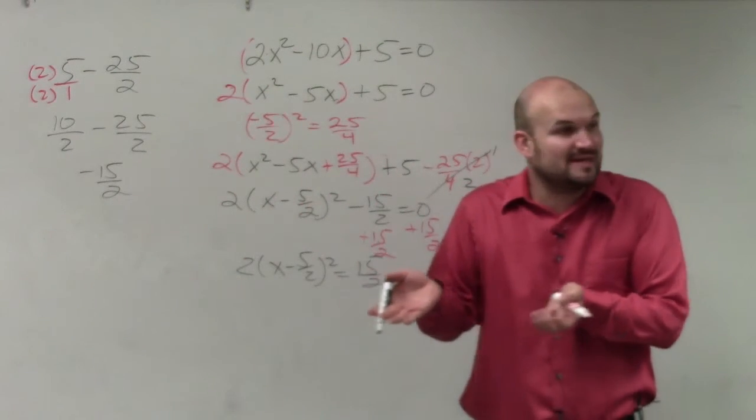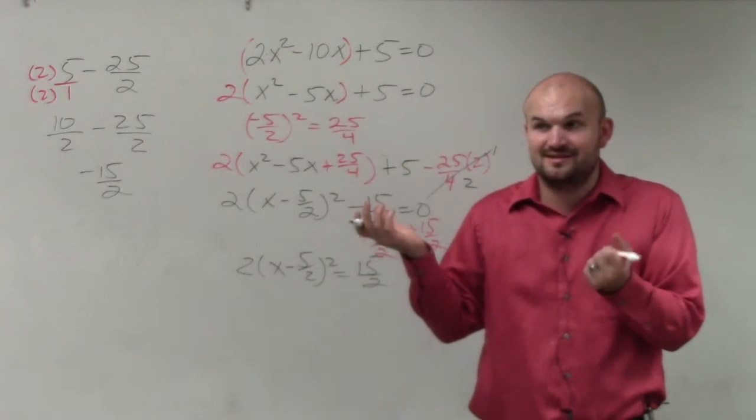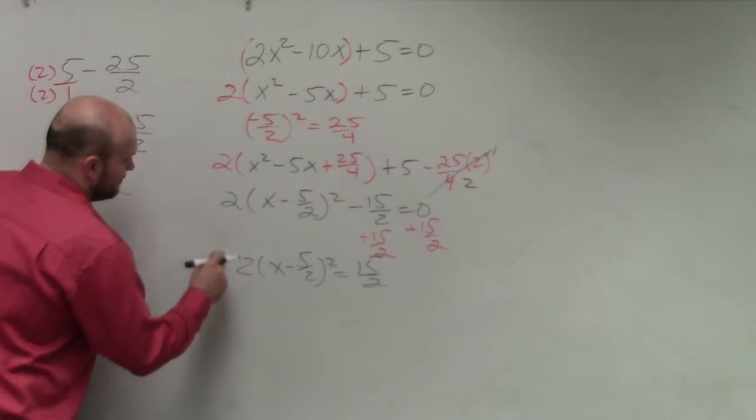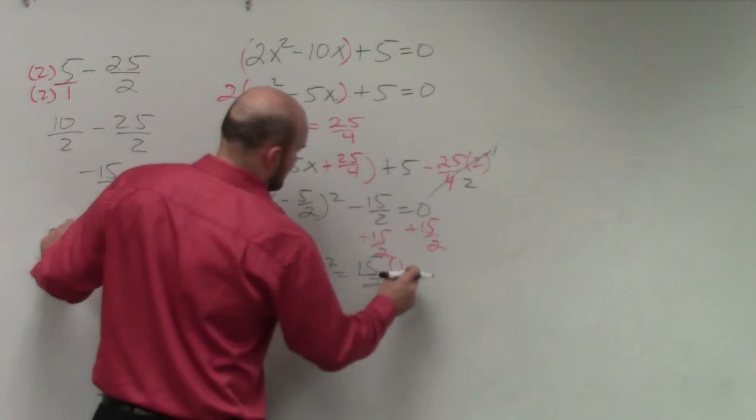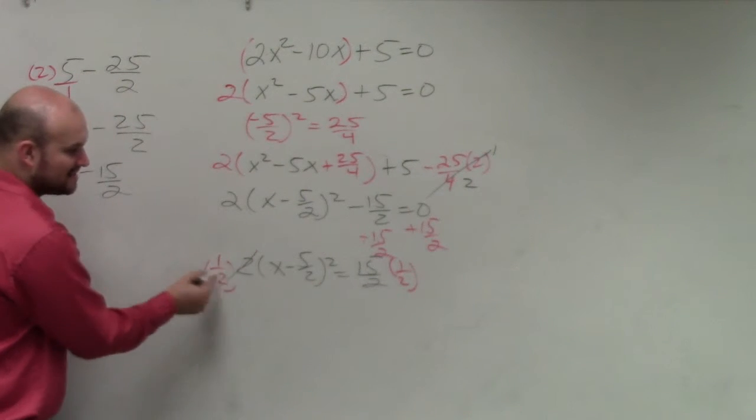So I have 2 times x minus 5 halves squared equals 15 halves. If you have a fraction divided by a number, that's the same thing. Taking a fraction divided by a number is the same thing as multiplying it by its reciprocal. So instead of dividing by 2, I could just multiply by the reciprocal on both sides.